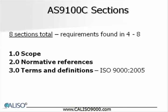So let's begin. Section 1 contains the scope of the standard. Section 2 lists the normative references, which basically lists other standards that apply to this document. Section 3 contains terms and definitions. There are some important terms and definitions specific to the aviation, space, and defense industry that must be understood correctly for effective implementation of the quality management system. These terms are risk, special requirements, critical items, and key characteristics.